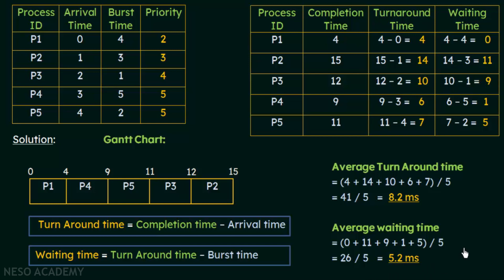Now we calculate the averages. The average turnaround time is (4 + 14 + 10 + 6 + 7) divided by 5, which gives us 41 divided by 5, equal to 8.2 milliseconds. The average waiting time is (0 + 11 + 9 + 1 + 5) divided by 5, giving us 26 divided by 5, which is 5.2 milliseconds. The most important step is forming the Gantt chart; after that, using these formulas makes it easy to calculate turnaround times, waiting times, and the final answers. I hope this was clear — thank you for watching.